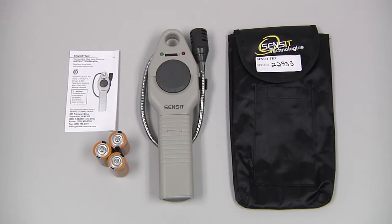The standard ship kit for the Sensit TKX includes the instrument with a carrying pouch, the instruction manual, and three C-cell batteries.